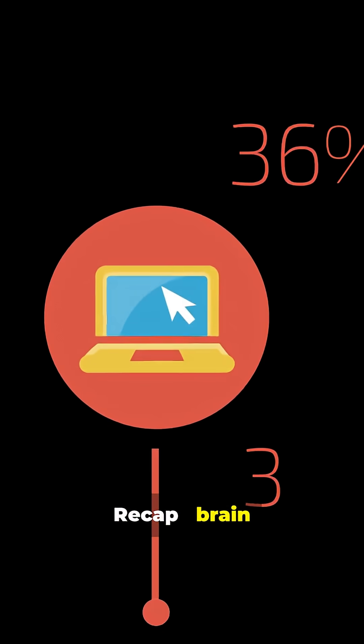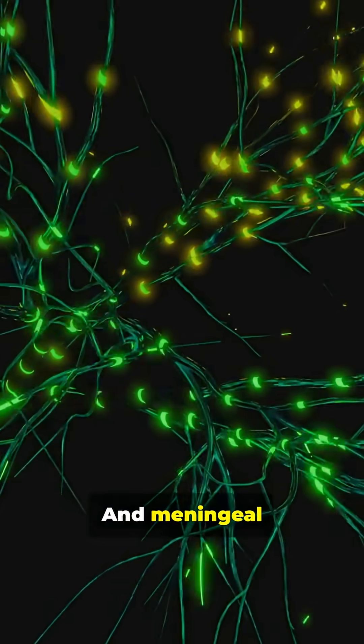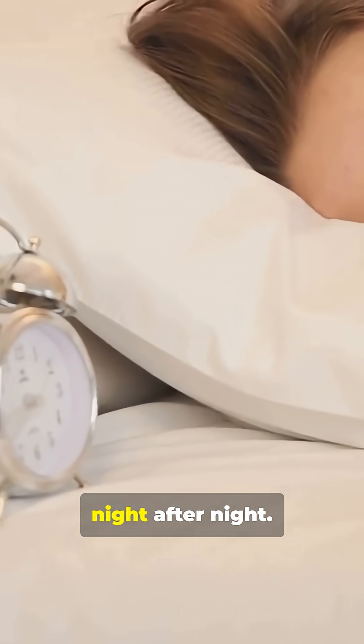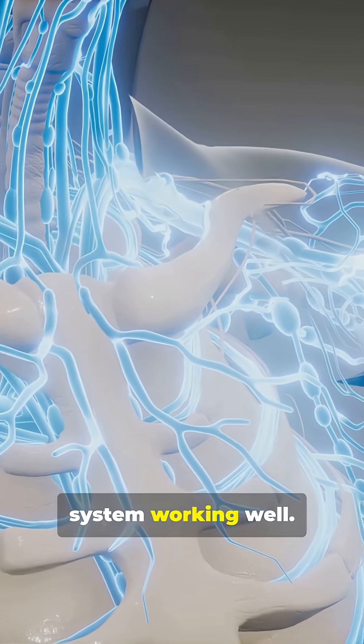Recap. Brain cleanup equals glymphatic flow and meningeal lymphatic vessels provide the exit route. Sleep keeps the system efficient night after night. Circulation keeps waste moving and the system working well.